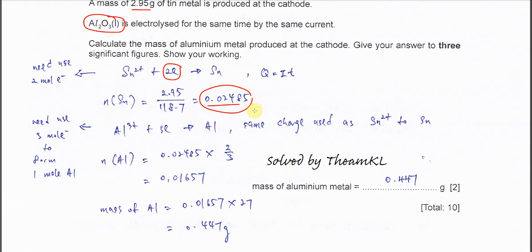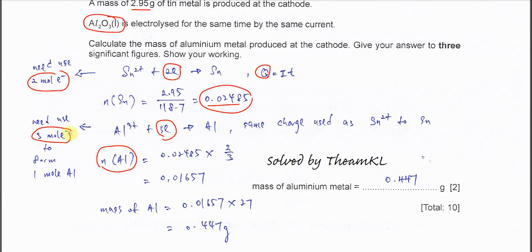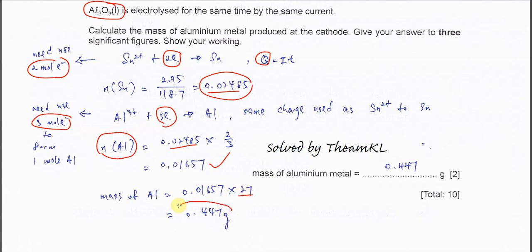The same charge Q is used for the electrolysis of the aluminium oxide. To form aluminium, three moles of electrons are required. That's why we use the ratio two over three: two moles used for Sn, but aluminium needs three moles of electrons. So the moles of aluminium equals the moles of Sn times two over three, which gives this number of moles. Then multiply by the molar mass of aluminium to get the mass: 0.447 grams.